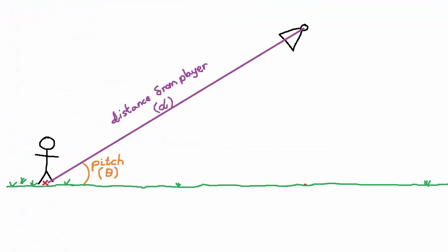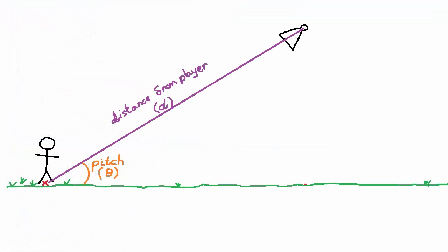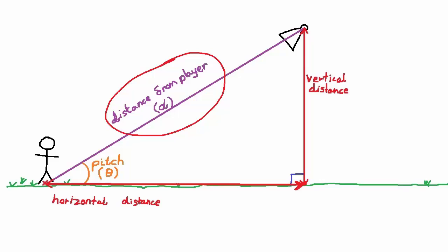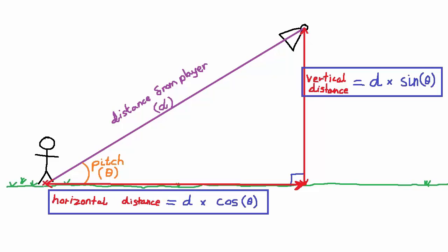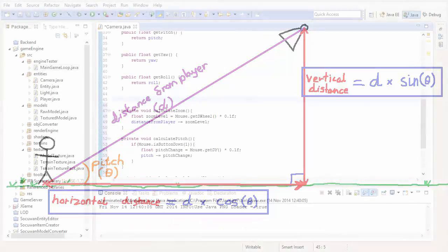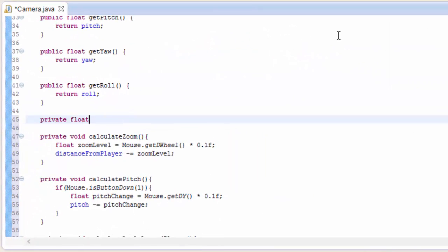Now that we have all these variables controllable by user input, we have all the information needed to calculate the camera's position and rotation. To help us do this we're first going to calculate two distances: the camera's vertical distance from the player and the camera's horizontal distance from the player. We know the total distance from the player and the pitch angle, so using the trigonometry shown earlier we can very easily calculate both the horizontal and vertical distances.